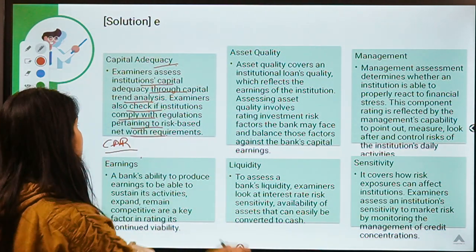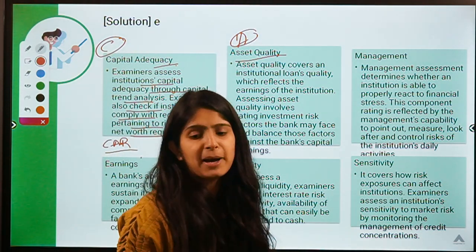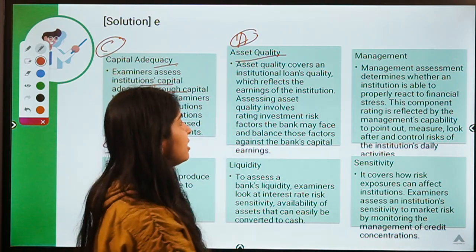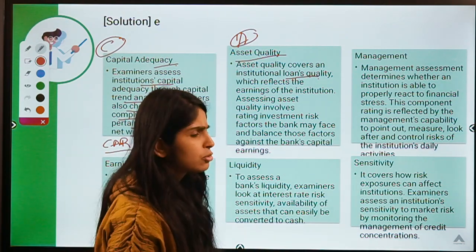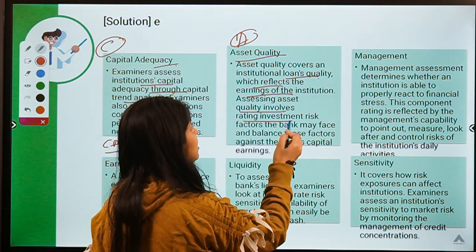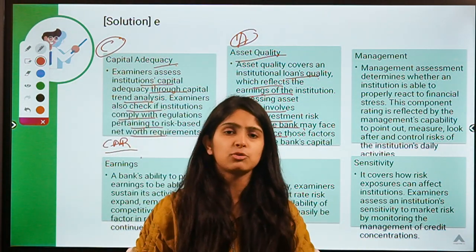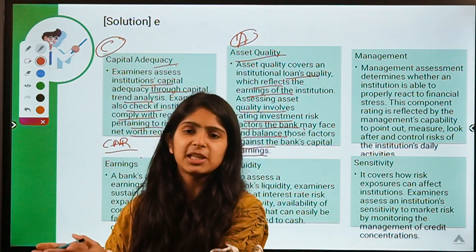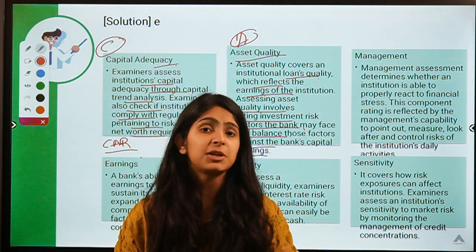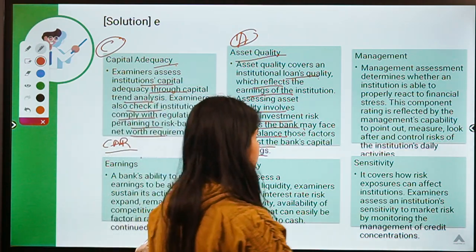A stands for Asset Quality — the credit worthiness of the borrowers to whom the bank is lending, reflecting the quality of loans and the earnings of the institution. It involves rating investment risk factors and balancing them against the bank's earnings. Banks can analyze whether each borrower consistently pays installments or defaults on some, keeping a close check on whether they are going to default or not.